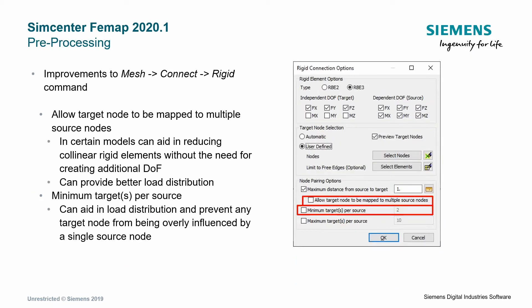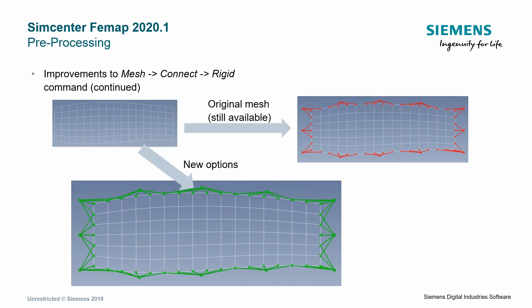Another improvement is to the Mesh Connect Rigid command. They've added the ability to target multiple source nodes with a target. This is helpful if you're trying to stitch a fine mesh into a larger mesh — it helps you smooth out the influence of that coarse mesh on the fine mesh. Previously each coarse node would get a couple of nodes without overlap; now you can have a little bit more overlap and smooth out the influence of the outer coarse mesh on the fine mesh you're sewing in.